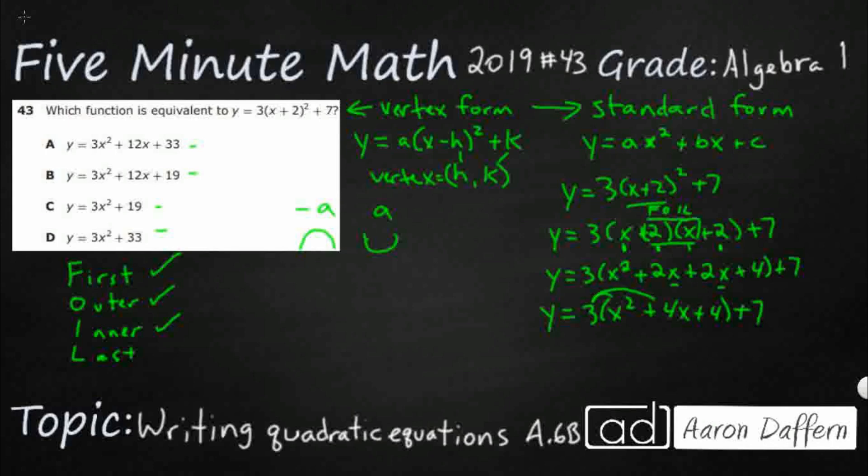Now we need to distribute out that 3 and multiply that by each of the terms inside. So 3x squared plus 3 times 4 is 12x plus 3 times 4 is 12. We could take the parentheses off finally. But now we simply need to combine those like terms. I get a 12 plus 7. So after all of that work, we're going to get y equals 3x squared plus 12x plus 19.